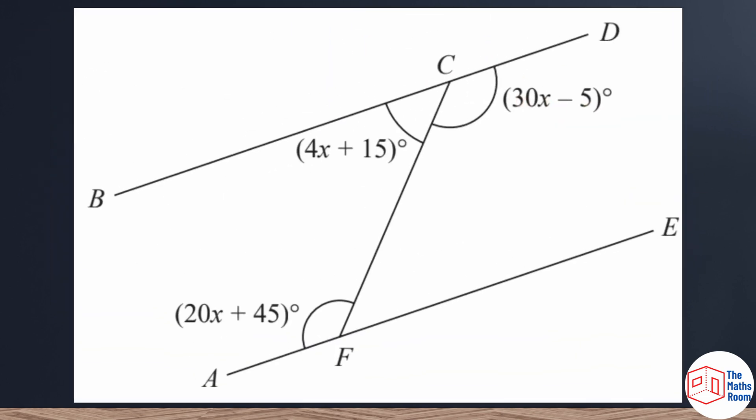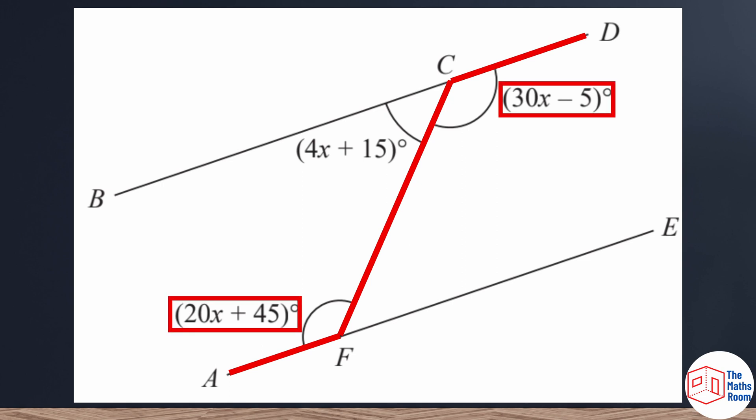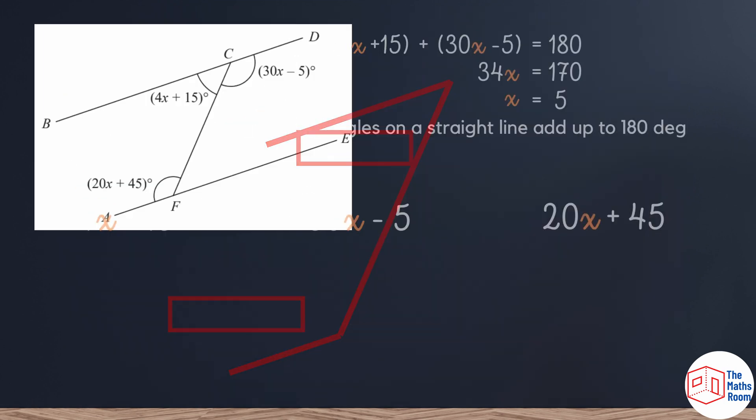Now, if we were to show or prove that those two lines are parallel, then we would know that we would either have those two angles as alternate angles, and they would be equal to each other. Or we could go down the route that these two angles, if I added them together, they would be equal to 180 degrees.